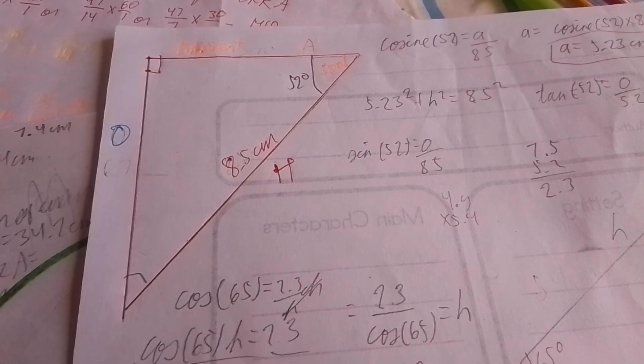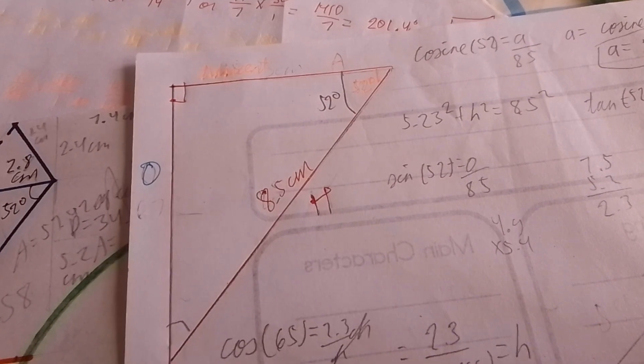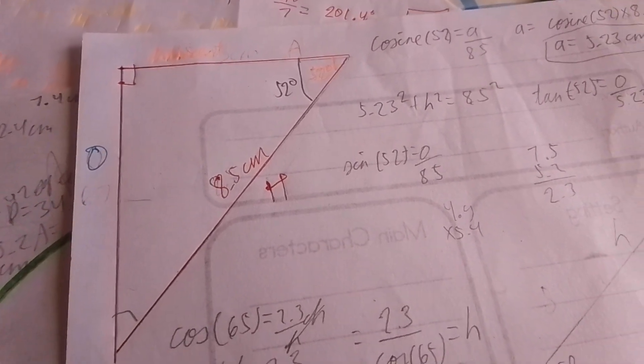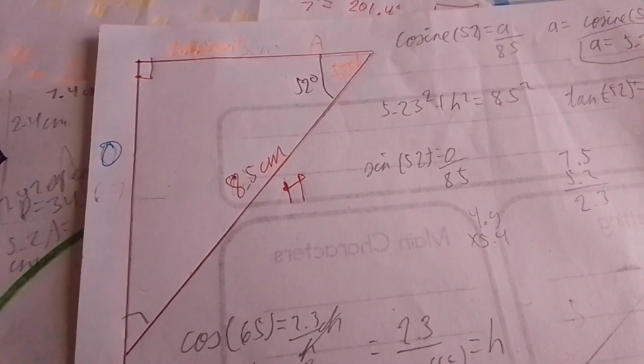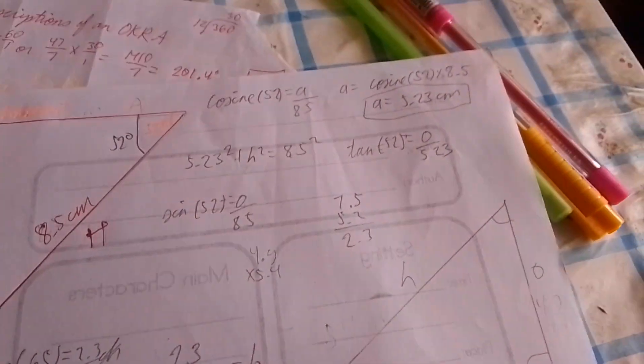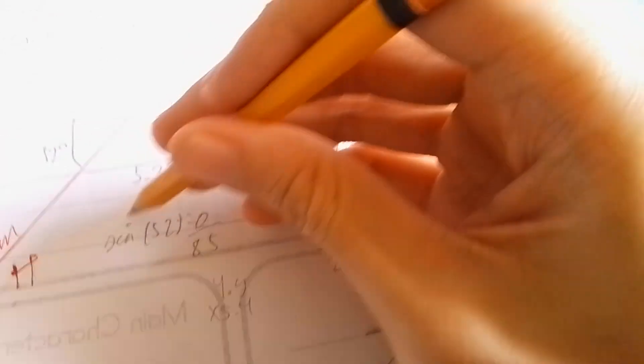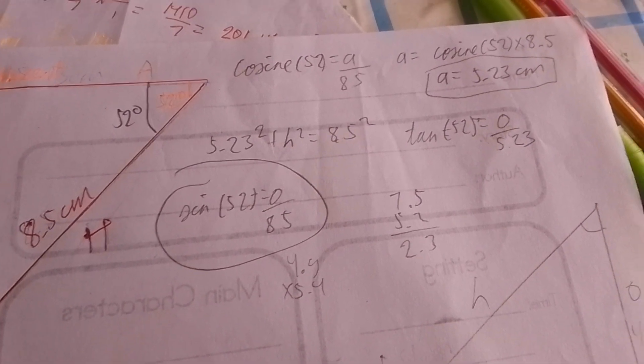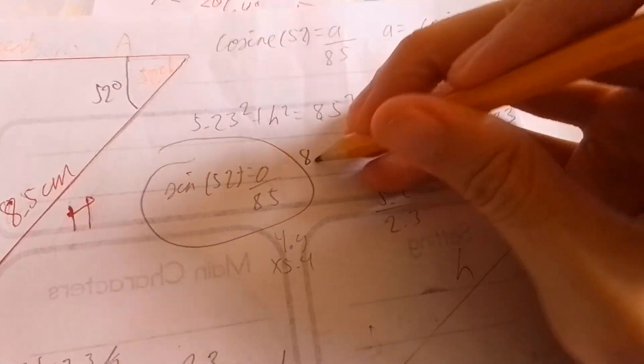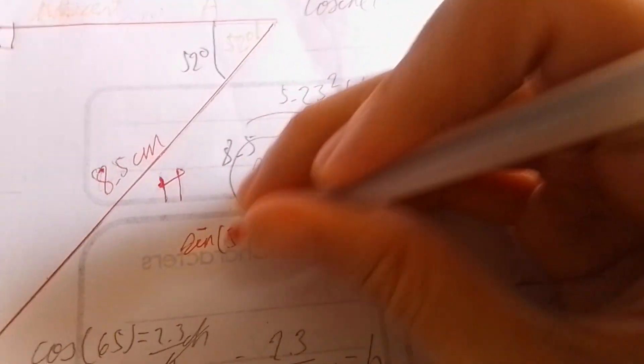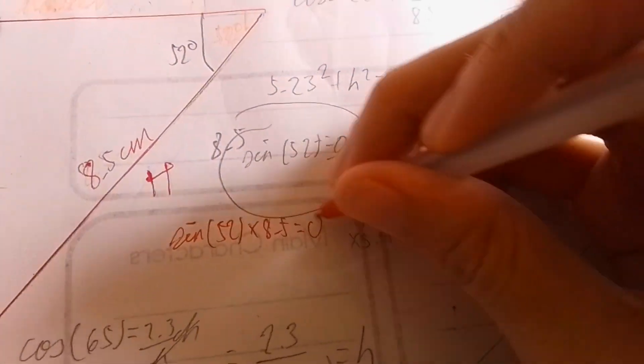Now let's solve. We have 52 degrees and 8.5. Now we need to find the opposite. So what formula do we use? It's sine. The hypotenuse is given and if you're looking for the opposite, use sine. So therefore sine of 52, this is the formula. Sine of 52 degrees equals the opposite divided by 8.5. You need to apply the ratio and multiply both sides by 8.5.